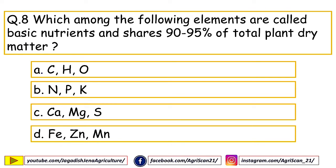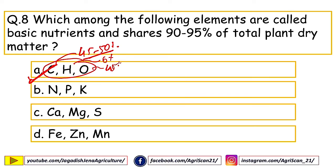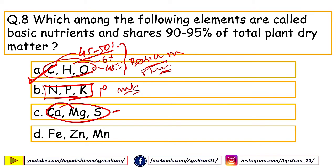Next question: which elements are called basic nutrients and share 90–95% of total plant dry matter? Options include carbon, hydrogen, oxygen, nitrogen, phosphorus, potassium, calcium, magnesium, sulfur, iron, zinc, manganese. The right answer is carbon, hydrogen, oxygen (CHO). Carbon contributes around 45–50%, oxygen 40–45%, and hydrogen around 6%. CHO are called basic or structural nutrients. NPK are called primary nutrients, calcium/magnesium/sulfur are secondary nutrients, and iron/zinc/manganese are micronutrients.